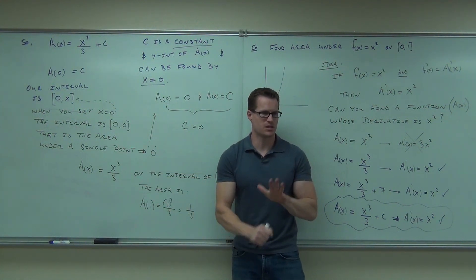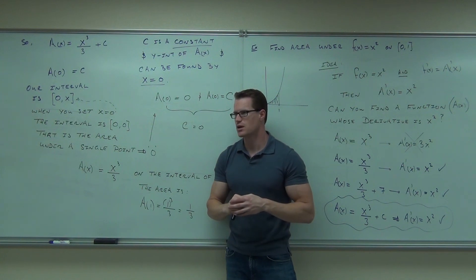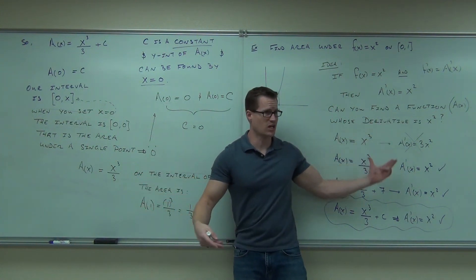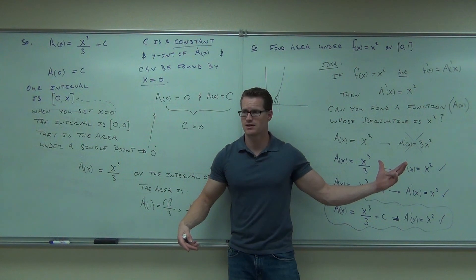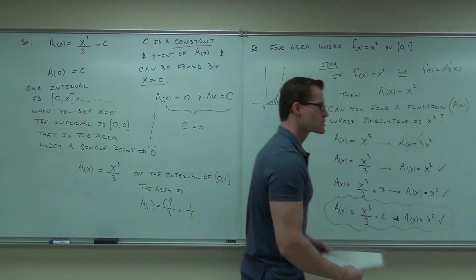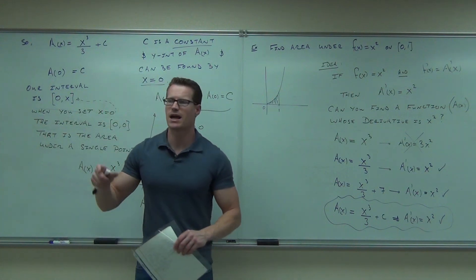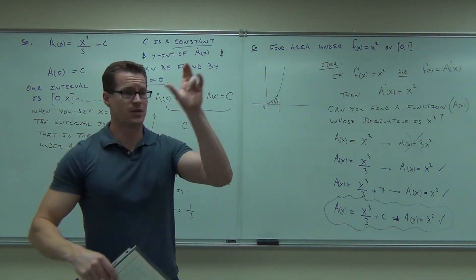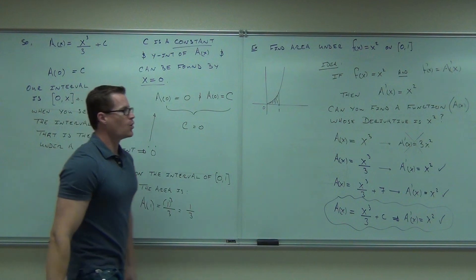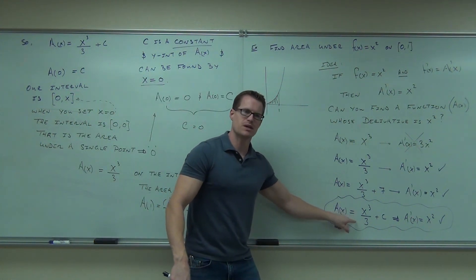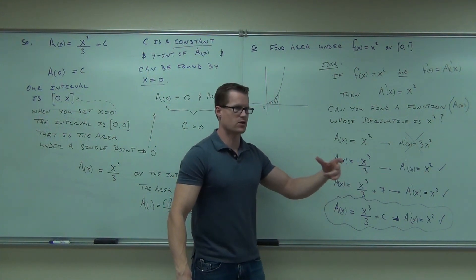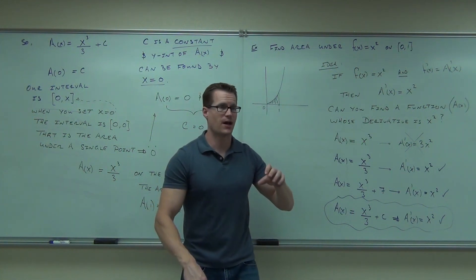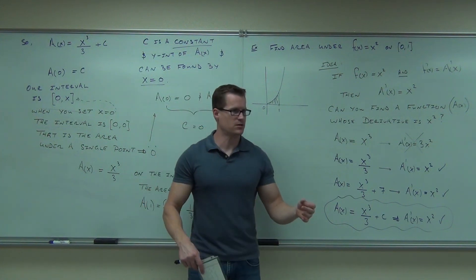We're going to practice anti-derivatives for most of the rest of this section. This concept is called the indefinite integral — 'indefinite' means I'm not giving you boundaries yet. If I give you zero and one as boundaries, that's a definite integral — an actual number for the area between those points. Without a range, you get the area function plus C. That's the difference between indefinite and definite integrals.